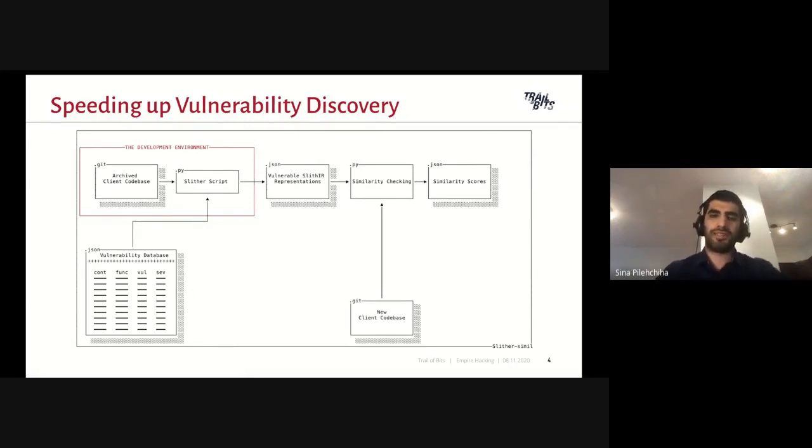And Slither, which has the same pronunciation almost as Slither, is SlithIR-Intermediate Representation, which is Trail of Bits representation for low-level representation for Solidity code. So when we generate those representations, we then utilize machine learning similarity detection methods to compare the new client's codebases to the vulnerabilities that we have, and we will see if there are high similarity scores between any of the vulnerabilities in our database and any functions in the new client's codebase.